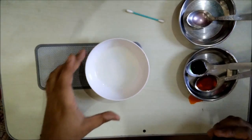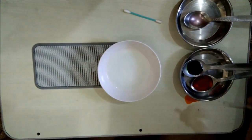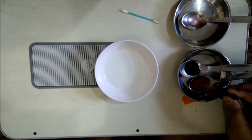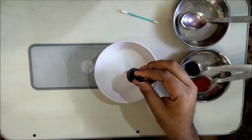So what we will do is we've taken this milk in this bowl, a little bit of milk in the bowl. We'll take one of the colors in the dropper and we will drop it gently at the center of the milk.